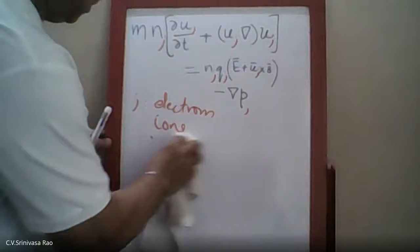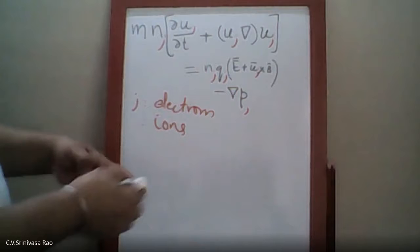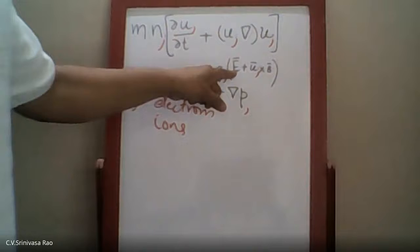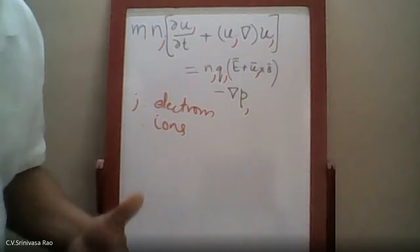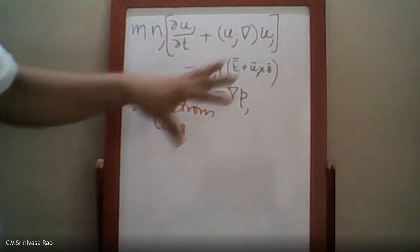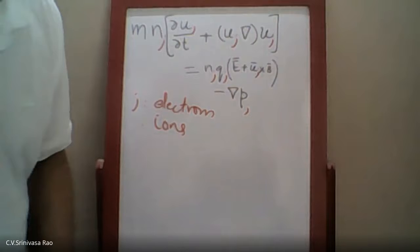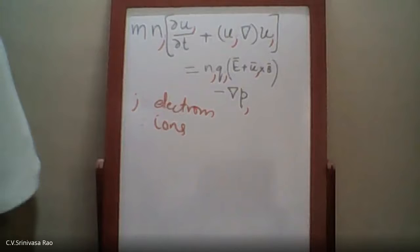Essentially what this equation tells you is that it's a momentum transfer equation. You have a fluid element which is under the influence of the magnetic field and electric field, and also there's a momentum transfer — that is how the fluid elements move. This essentially tells you the equation of motion for the fluid element. There's a very big assumption that we have made here, which we need to discuss: the fluid approximation, and under what conditions we can write an equation of this kind.